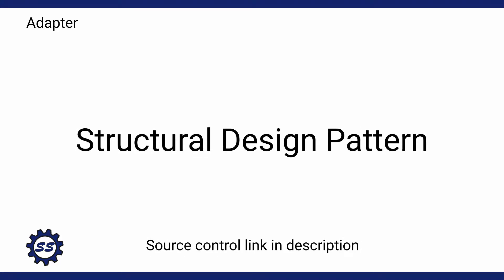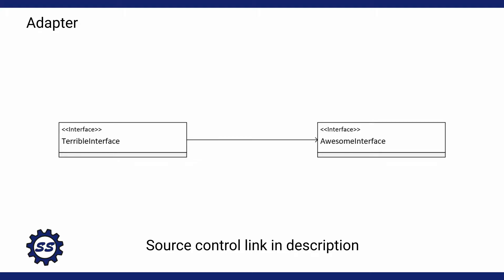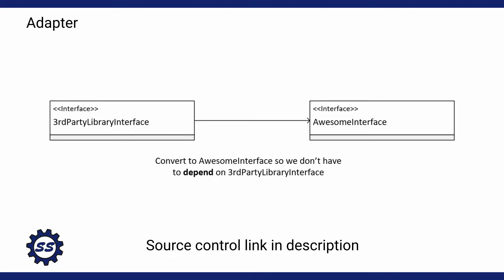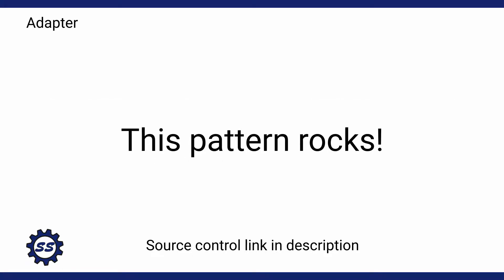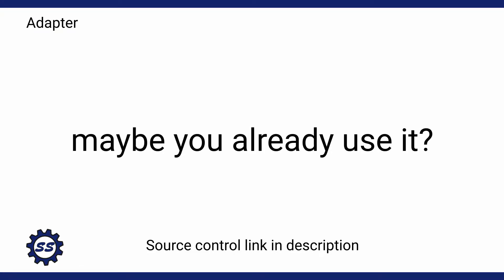The adapter pattern is a structural design pattern that allows us to convert a class's interface to some other kind of interface or abstract class that we depend on in our application. This is extremely useful when dealing with third-party libraries, because those libraries don't usually use the interfaces defined in our application. So we have to adapt those classes to whatever interfaces we depend on. This is a pretty common and extremely useful pattern, so you might actually be using it without even knowing it.